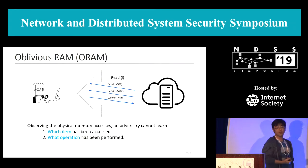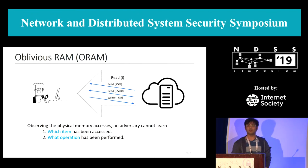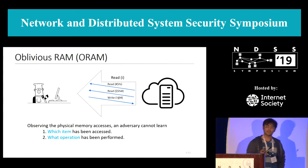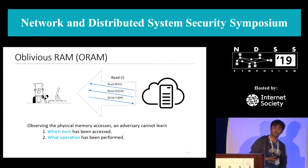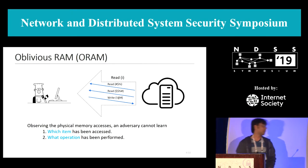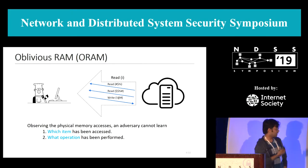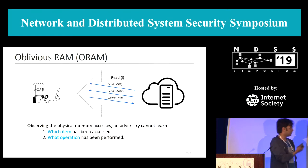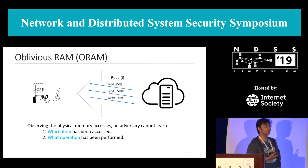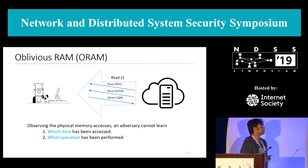If you want to hide your access patterns, you could use an oblivious RAM. At the high level, an oblivious RAM allows a client to access items from an untrusted physical store without leaking to the storage adversary which items are being accessed and what kind of operations are being performed on them. Dilbert wants to access an item from the cloud; instead of directly downloading it, Dilbert uses an oblivious RAM protocol, and what the cloud observes is a bunch of random accesses not correlated to the item.